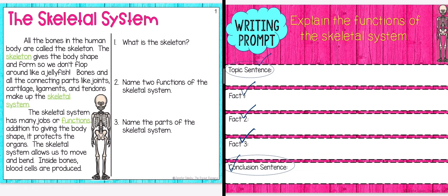For my topic sentence — this is mainly about how all the bones in the human body are called the skeleton. We learned that the skeleton gives us shape so we don't flop around, and the bones connect parts like the joints, cartilage, ligaments, and tendons. So what I'm going to use as my topic sentence is: the skeletal system has many jobs or functions.